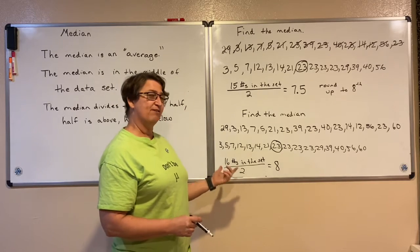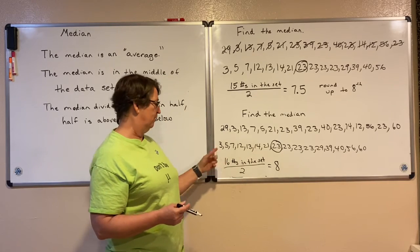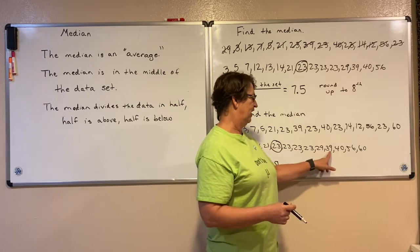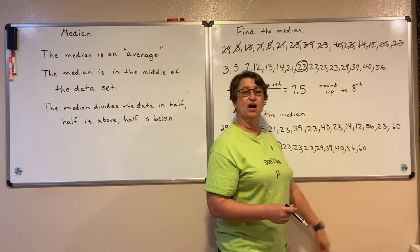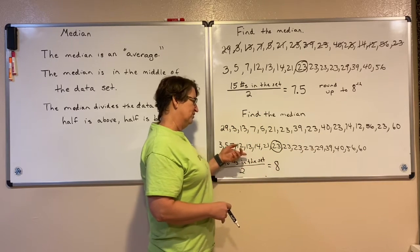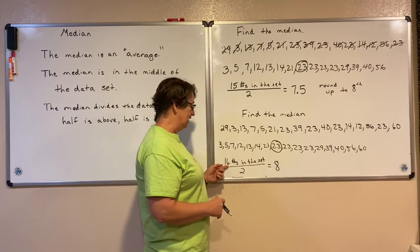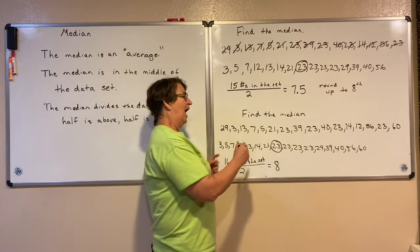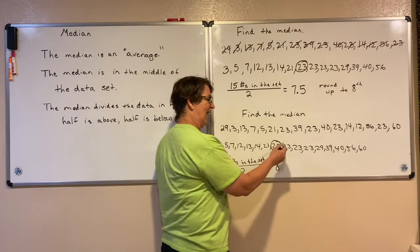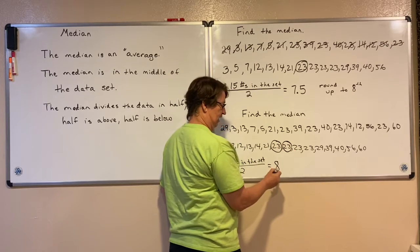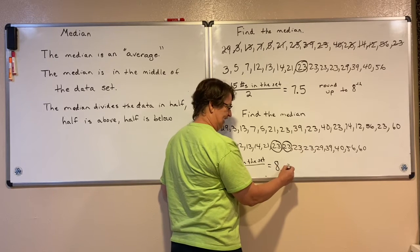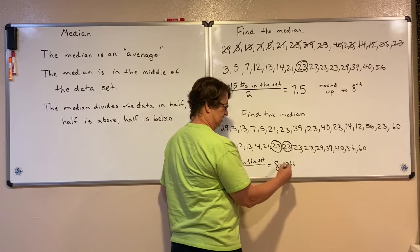Now let me see if I have the same number below as above. Counting 7 below, but 8 above — it's not the same on both sides. And that's because it was an even number to begin with. So anytime I have an even number to begin with, I actually end up with two numbers in the middle. In this case it's the 8th, but it's also the 9th.